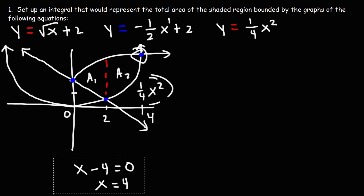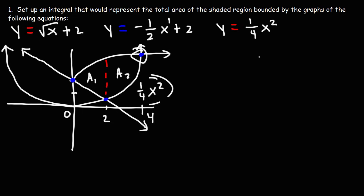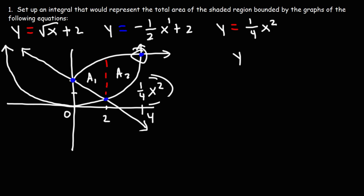We can verify: plugging four into one-fourth x squared gives one-fourth times 16, which is four — so y equals four. Plugging four into square root of x plus two gives square root of four plus two, which is two plus two, also y equals four. So both curves meet at the point (4, 4).